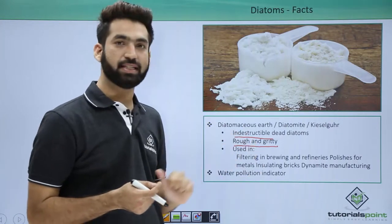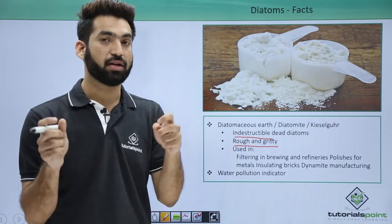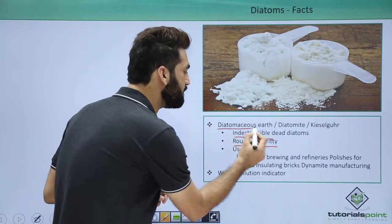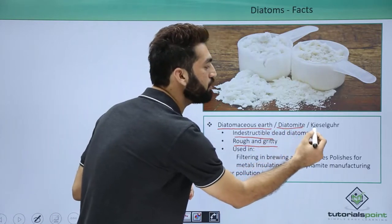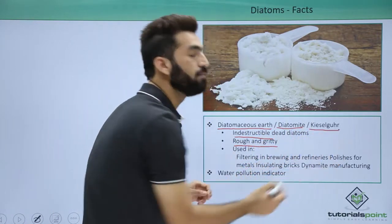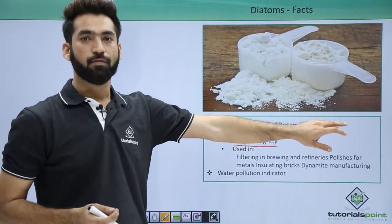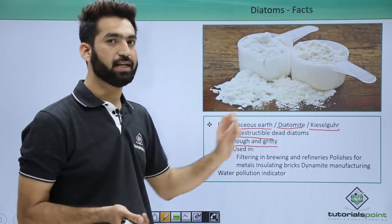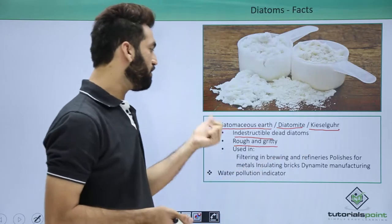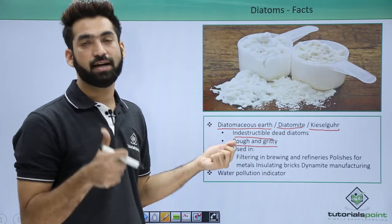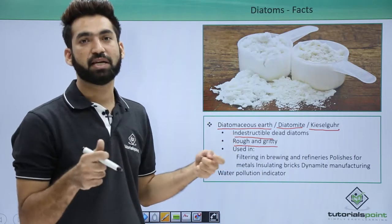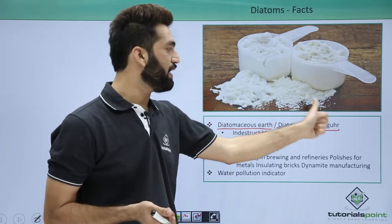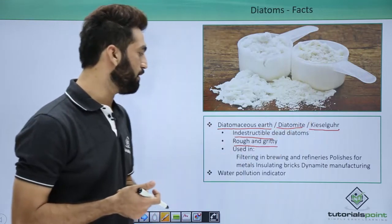That particular portion of dead diatoms, which is still indestructible and gritty, is called diatomaceous earth, or diatomite, or kieselguhr. Kieselguhr is a German word referring to silica and the gritty nature of silica.